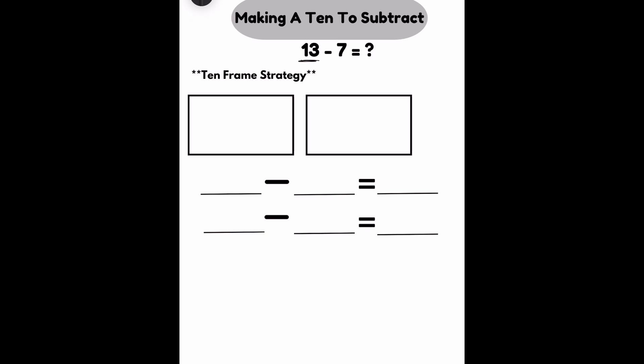So I need to put 13 counters in my 10 frames. So I'm going to set up my 10 frames to make sure that I have 10 in each frame or 10 boxes in each frame. I want to put a total of 13 counters in both of those frames. So I'm going to fill the first one with 10 and then put three more in this second one.